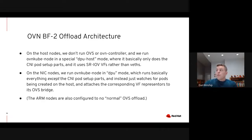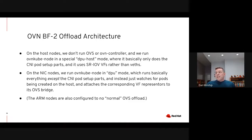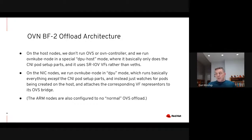So on the host nodes, we don't run OVS or OVN controller, and we run OVN kube node in a special DPU host mode where basically all it does is the CNI pod setup parts, and then it uses SRIOV VFs — virtual functions — rather than VETHs. On the NIC nodes, we run OVN kube node in a different special mode — DPU mode — which runs basically everything except the CNI pod setup parts, and instead just watches for pods being created on the host and attaches the corresponding VF representers to its OVS bridge.